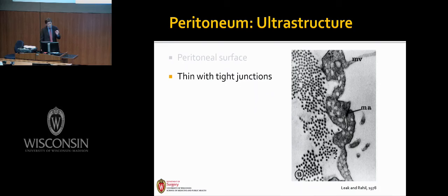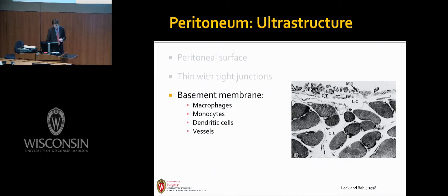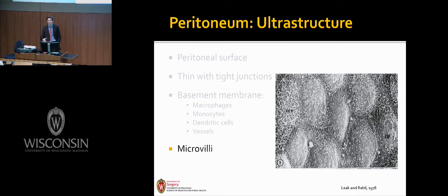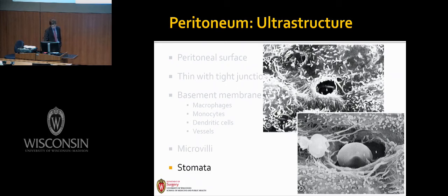Underlying the mesothelial cells is a basement membrane and stroma composed of mast cells, lymphatic channels, macrophages, and numerous small vessels. Microvilli cover the peritoneal surface and are responsible for secreting lubricants such as glycosaminoglycans. Under even higher magnification, stomata can be seen providing direct access to the underlying lymphatics of the peritoneum.